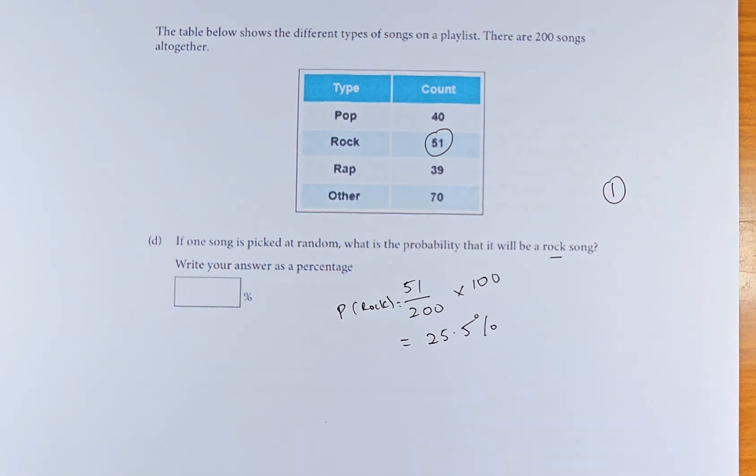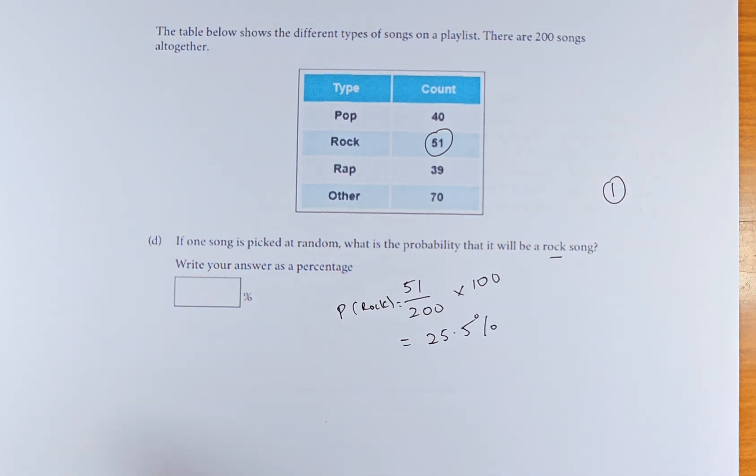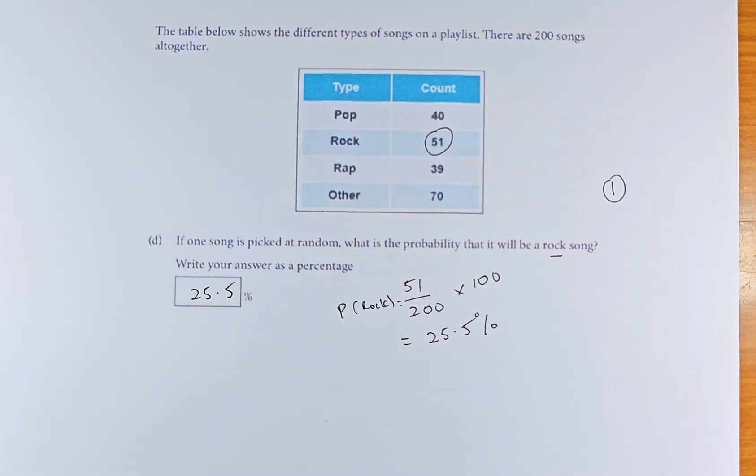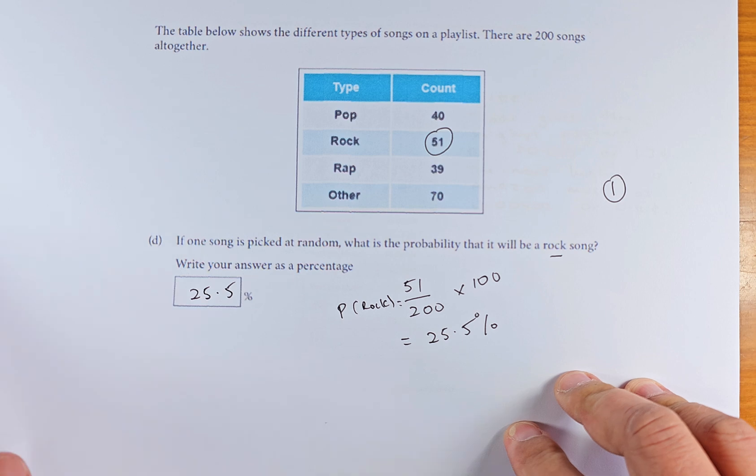The marking schedule gives the answer as 35%, though that is wrong. The answer to this question is going to be 25.5%. Great. Two more questions to go before we wrap up question 4.